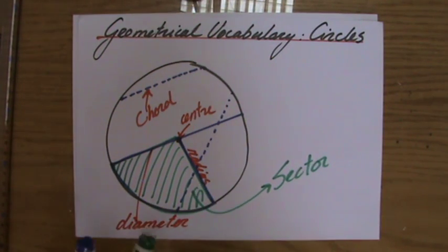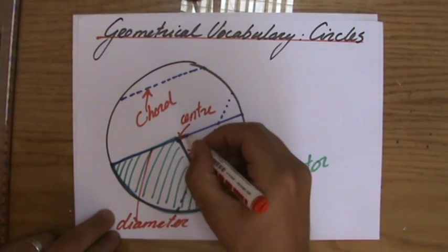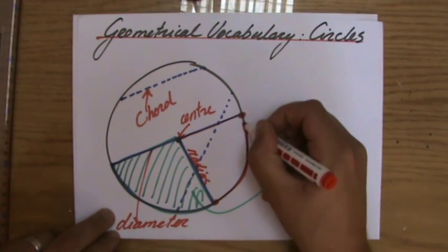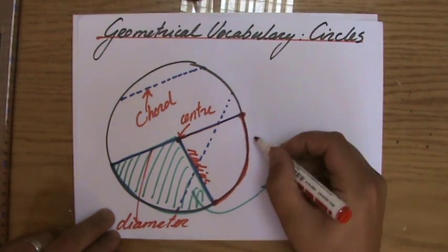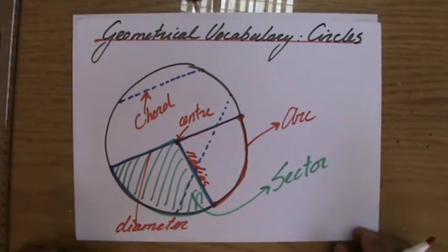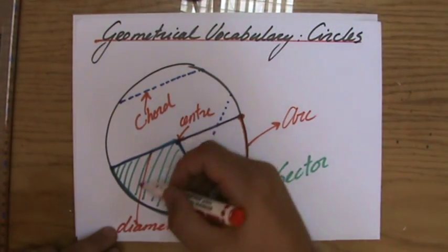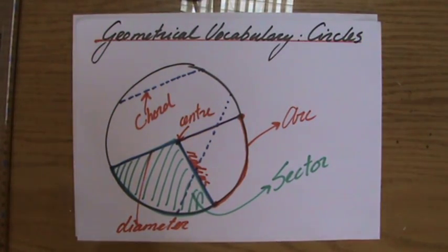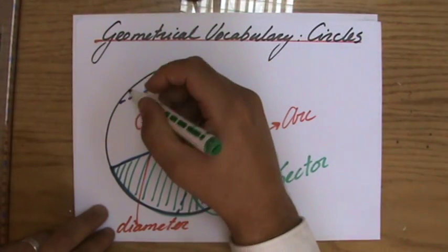If we look at a part of the circumference, so for instance this part of the circumference, how do we call that? We call that an arc. So a sector is that part of the area, the arc is that part of the circumference.